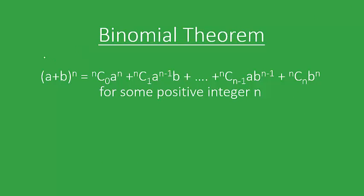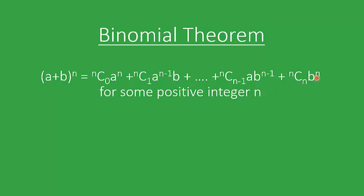Now, as you might have gotten an idea of how to express higher powers of x plus y, you might be wondering that it would be very tedious to build the complete Pascal's Triangle. But this is simplified by the use of a theorem called the binomial theorem, which gives the expansion of a plus b to the power n, where n should be a positive integer only. The expansion is: a plus b raised to the power n equals nC0 times a to the power n, plus nC1 times a to the power n minus 1 times b, continuing on to nCn times b to the power n.